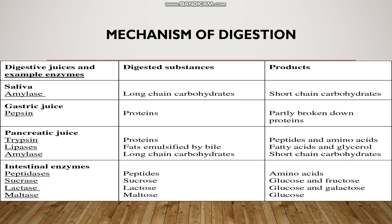Into the duodenum opens the liver and the pancreas. Liver secretes bile. Bile has no enzymes, but it is essential for digestion. Bile helps in the emulsification of fat. Emulsification is the breaking down of large fat globules into smaller droplets, thereby increasing the surface area for the action of the enzyme lipase. Bile is temporarily stored in the gallbladder.